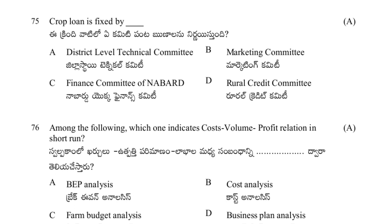Crop loan is fixed by: district level technical committee, marketing committee, finance committee of NABARD, or rural credit committee. The answer is district level technical committee — it decides and fixes the crop loans.